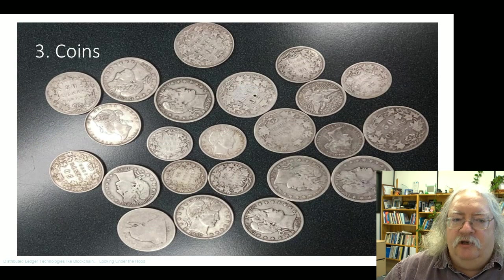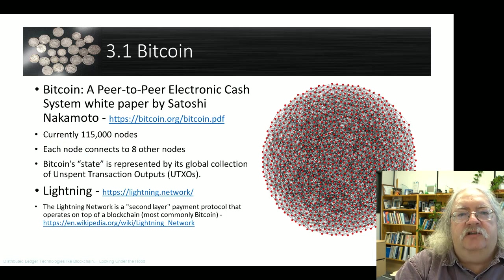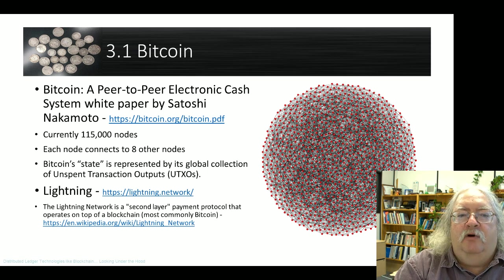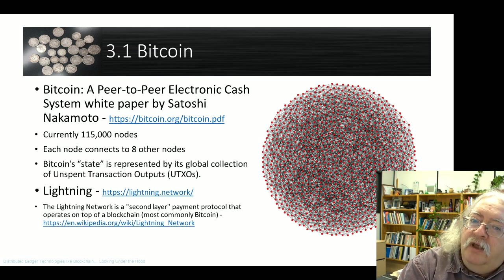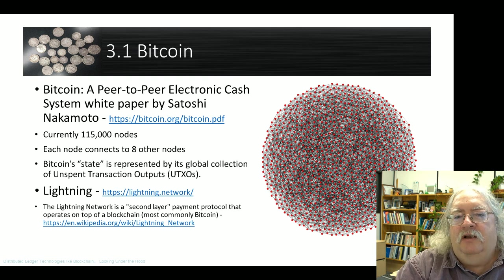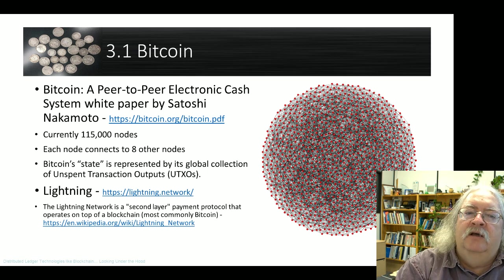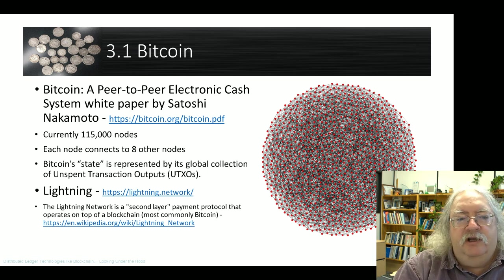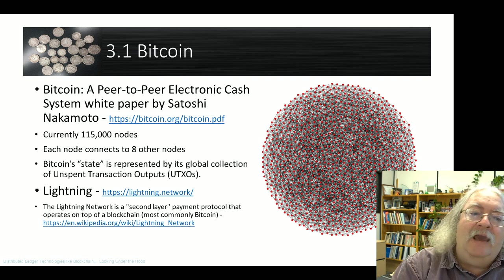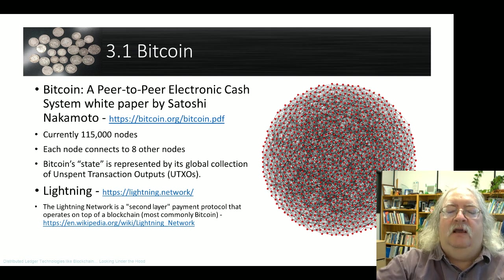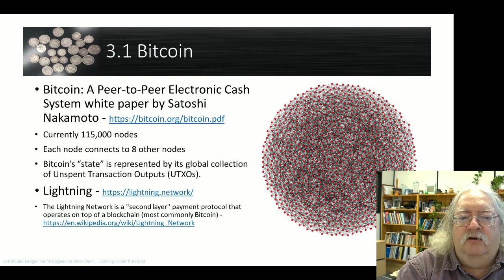The big thing about blockchain has always been the coins. The first blockchain was Bitcoin — a peer-to-peer electronic cash system based on a white paper created by Satoshi Nakamoto. It uses proof of work as the method to establish consensus among different partners in the blockchain. Currently there are 115,000 nodes in the network, and each node connects to eight other nodes, so you can see how transactions propagate quickly across the network.